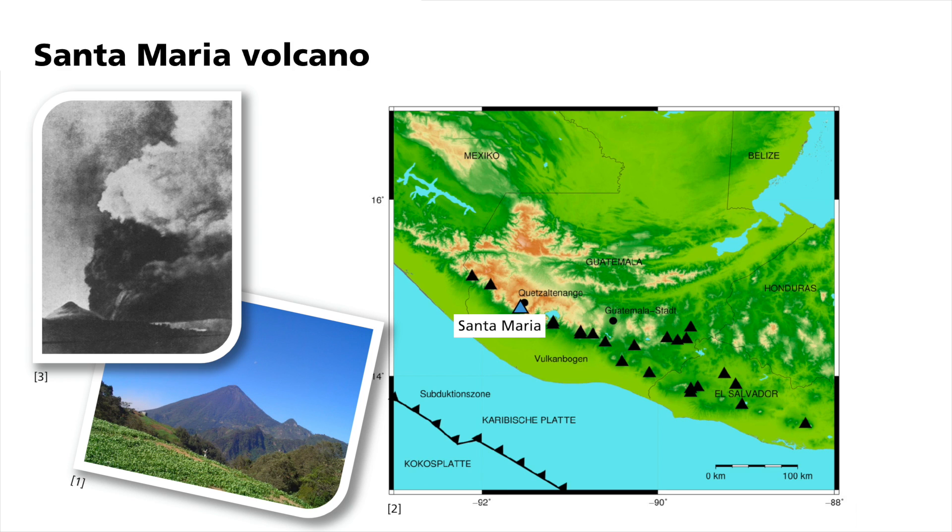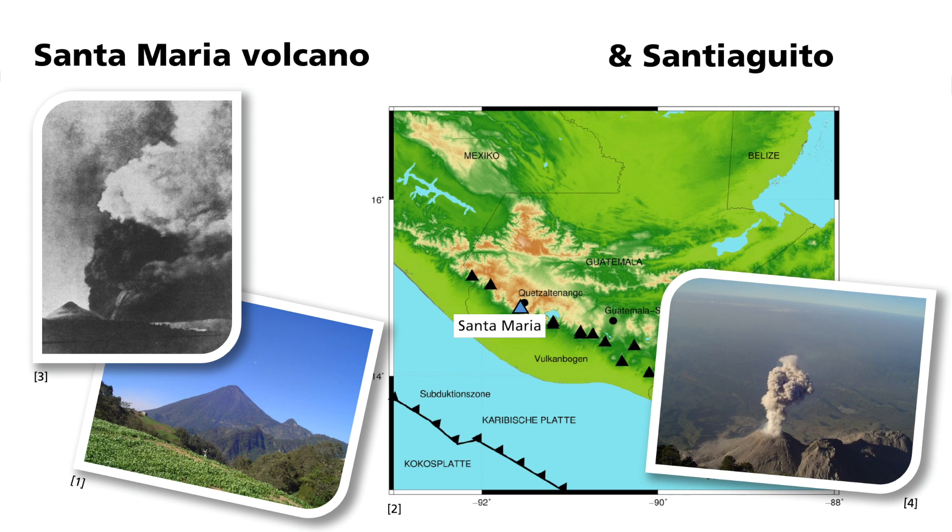Twenty years later, a new volcano began to form on the southwest flank of Santa Maria. This is called Santiaguito. After a strong eruption in 1929, Santiaguito is still very active.